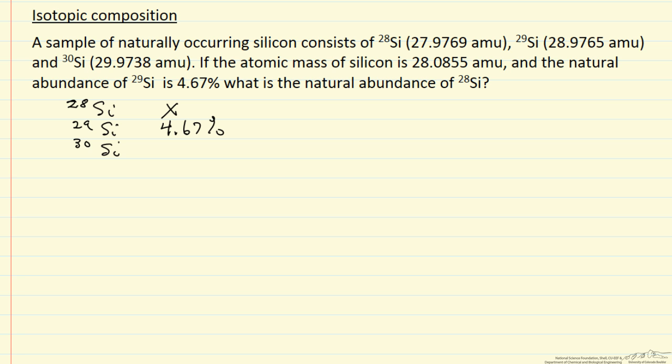The total percent is 100, so 100 minus x minus 4.67 is the percent of silicon-30. The average is 28.0855.